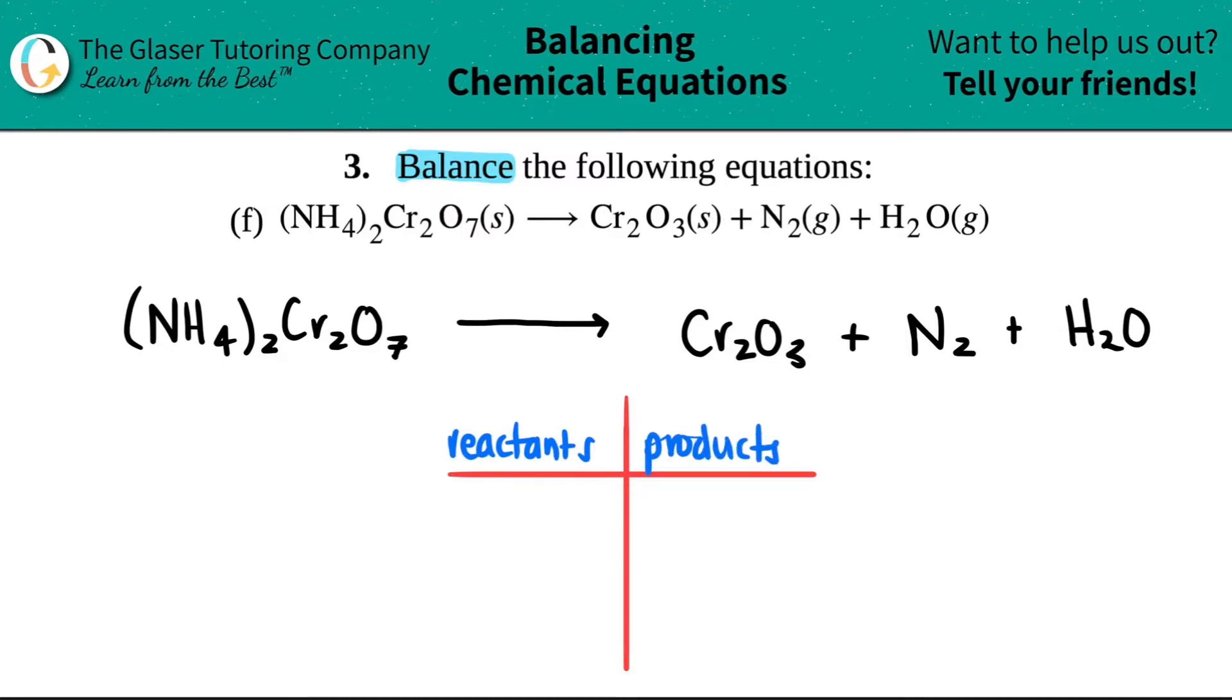Keep in mind that your reactants are always the left side, everything to the left of this arrow. And the products are what you produce, always the right side of the arrow sign.